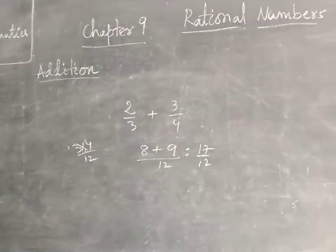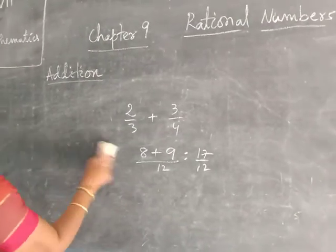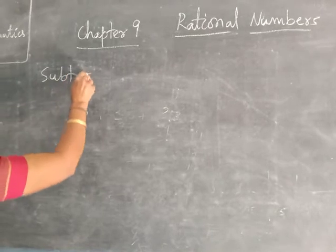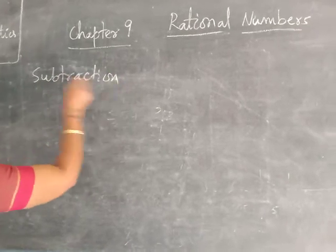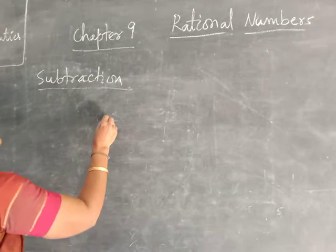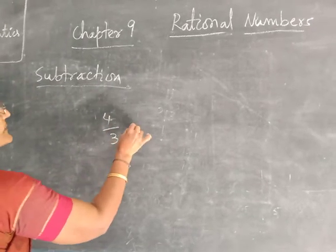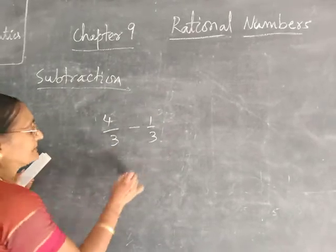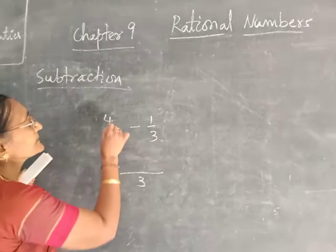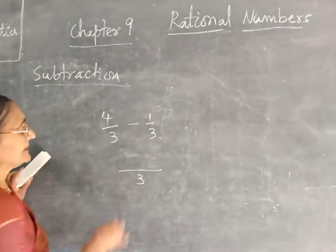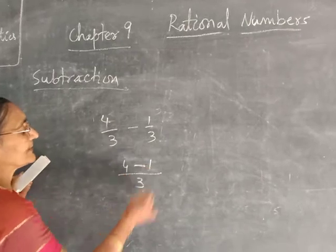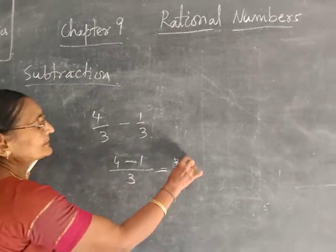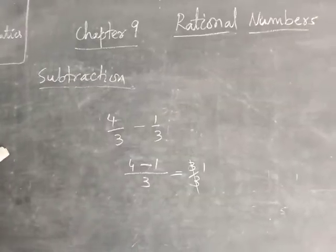By this way, you have to do the addition of the rational numbers. Now, subtraction. How do we do subtraction? Suppose the denominators are equal — for example, 4 by 3 subtract 1 by 3. Since denominators are equal, take the common denominator, then subtract numerator: 4 minus 1 is equal to 3. So it becomes 3 by 3, which is divisible and gives 1.